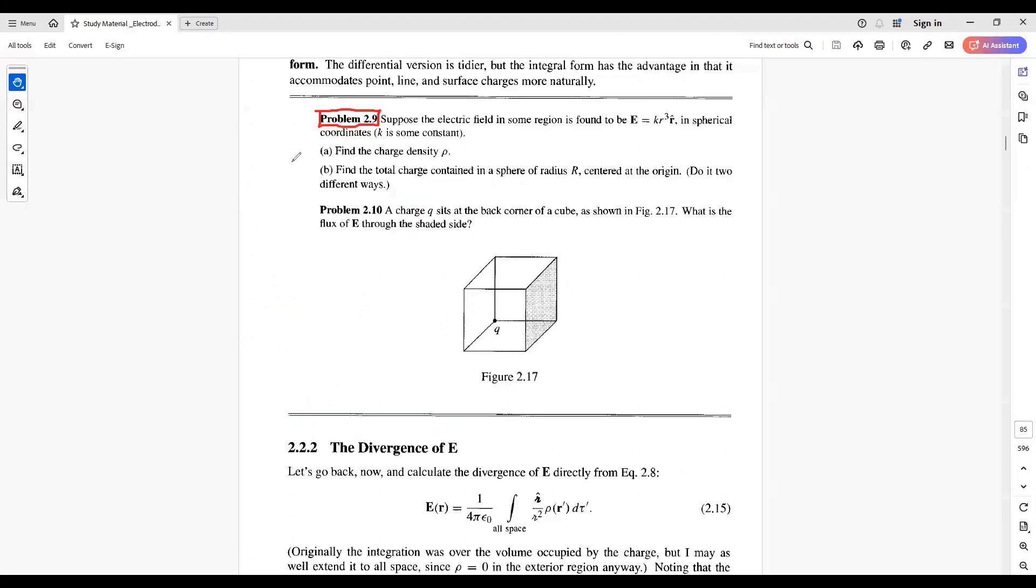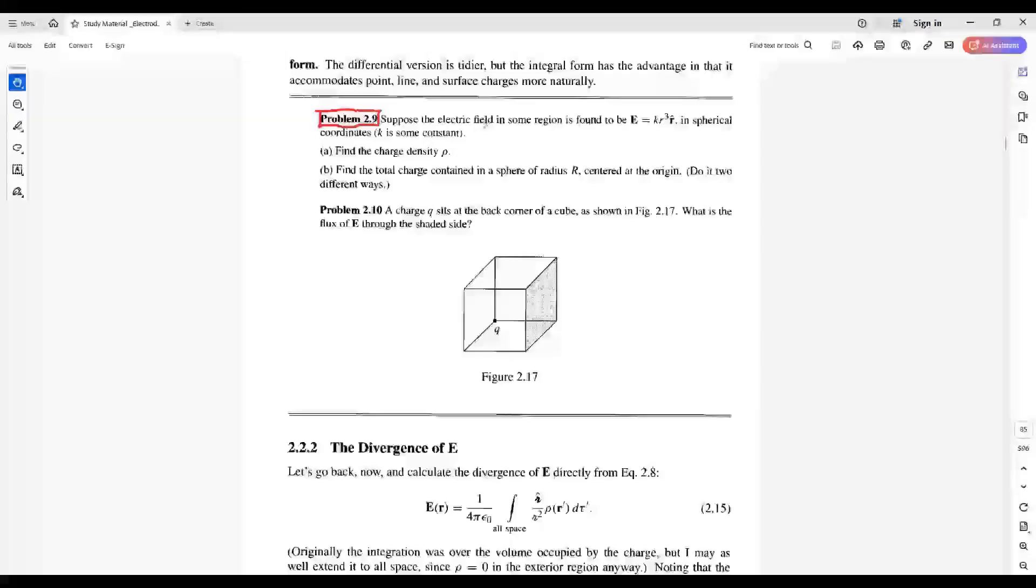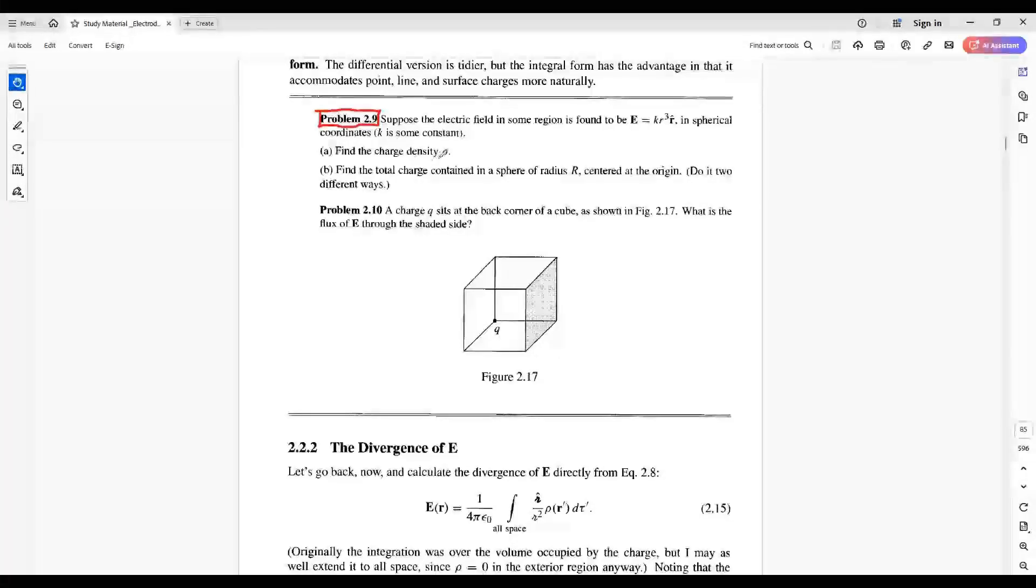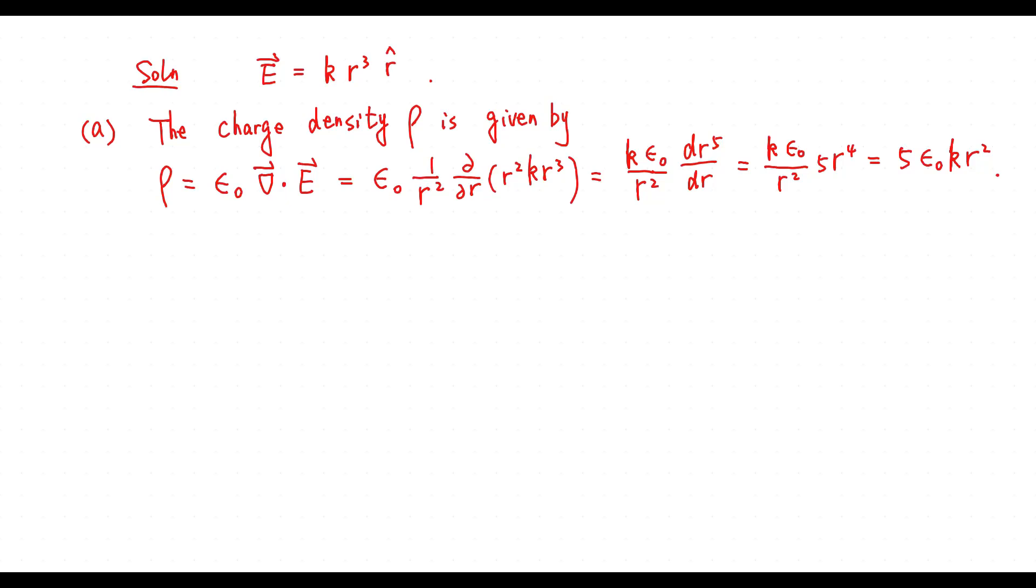Problem 2.9: Suppose the electrical field in some region is found to be this one, in spherical coordinates. Part A: Find the charge density ρ. Part B: Find the total charge contained in a sphere of radius r, centered at origin. Solution A: The charge density ρ is given by this one.